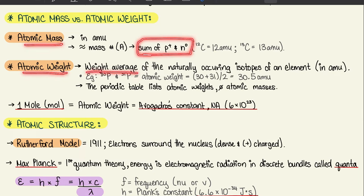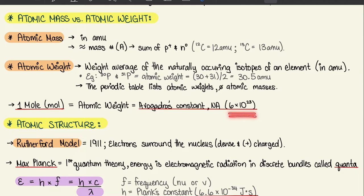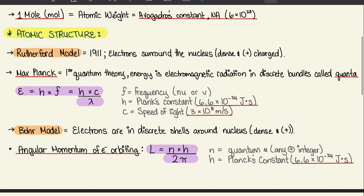To summarize: atomic mass is the sum of protons and neutrons; atomic weight is the weighted average. As a side note, 1 mole is equal to the atomic weight, which is equal to Avogadro's constant — represented as N_A, which is 6 times 10 to the 23. We're going to touch more on this later as we go through the chapter.